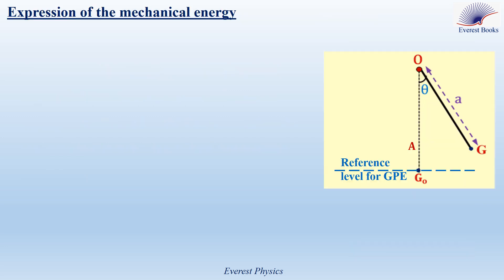Expression of the mechanical energy of the system, pendulum-Earth. Consider the compound or physical pendulum of the figure. This pendulum oscillates about a horizontal axis delta passing through a point O. G is the center of mass of the pendulum, or the point at which the whole mass of the pendulum is considered to be concentrated. G0 is the lowest position of G, or the position of G at equilibrium. A represents the distance between O and G.